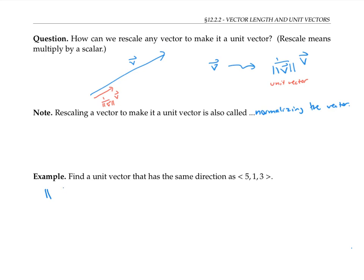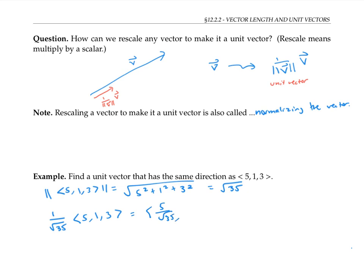Since the length of our given vector is the square root of five squared plus one squared plus three squared, that's the square root of 35. So we need to take our vector and multiply it by one over the square root of 35. That can be written in components as five over the square root of 35, one over the square root of 35, three over the square root of 35. So this is our unit vector.